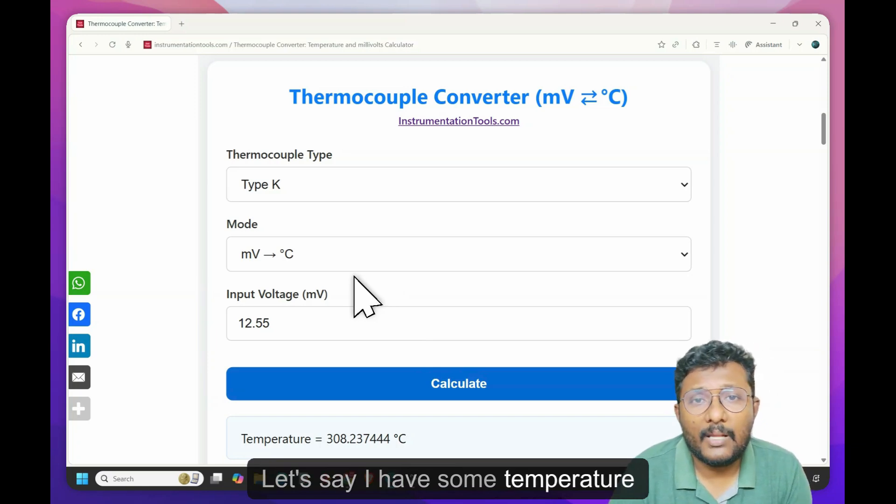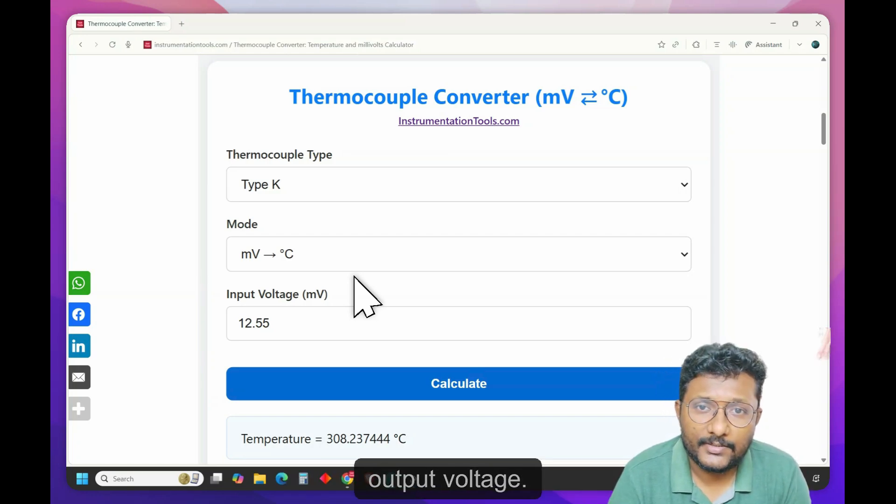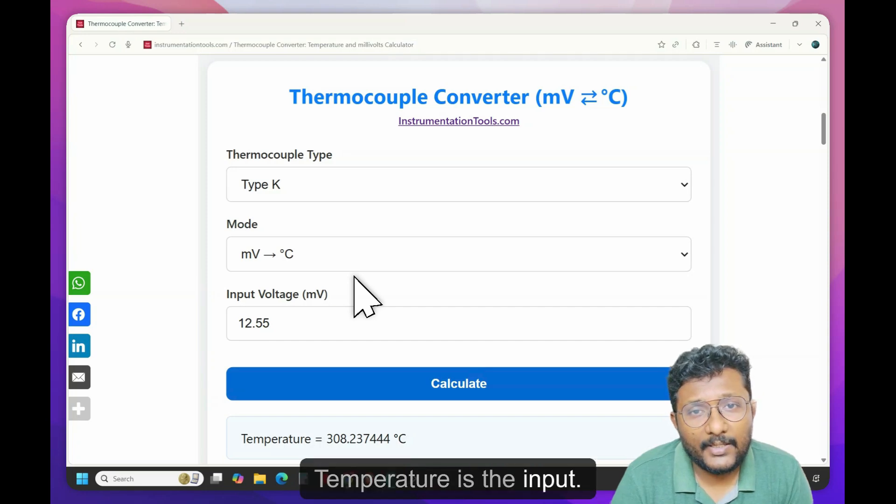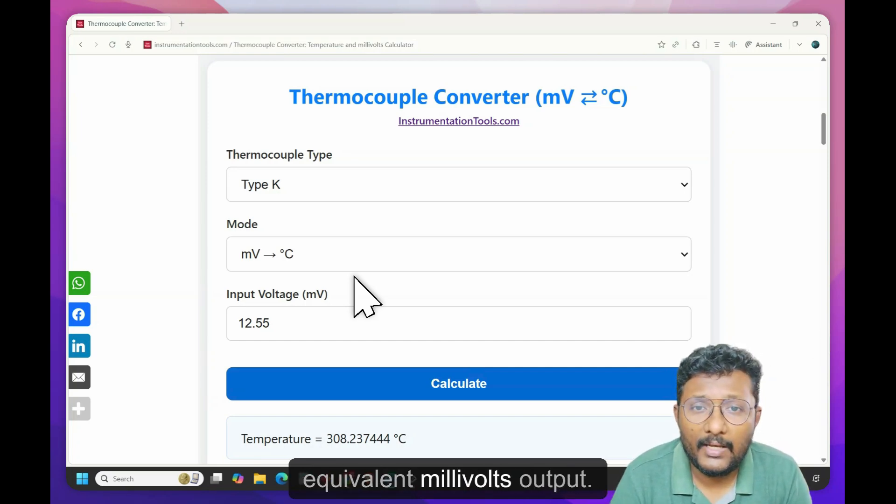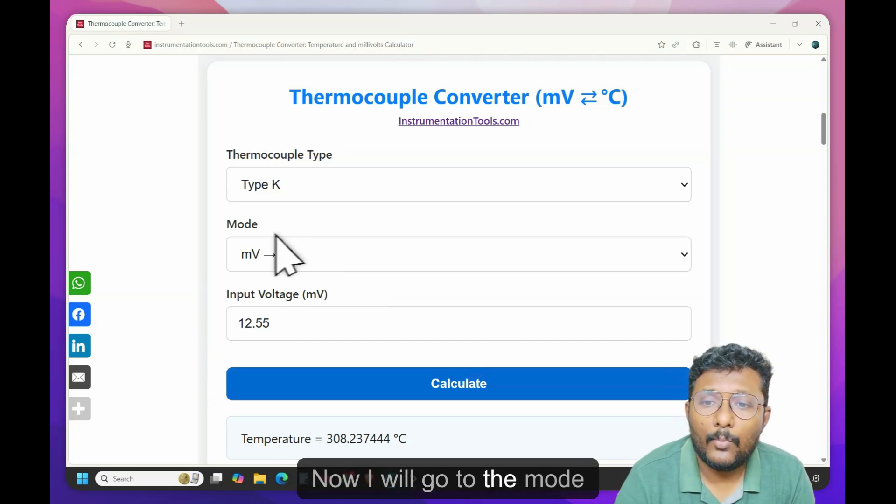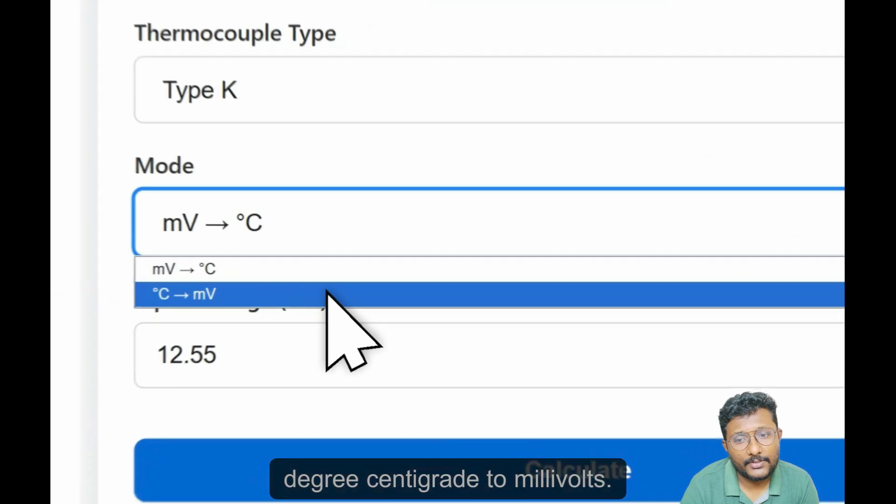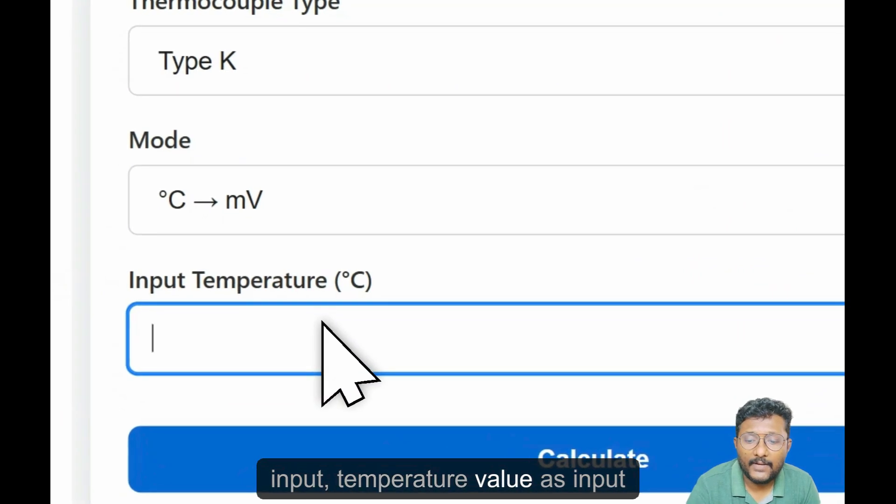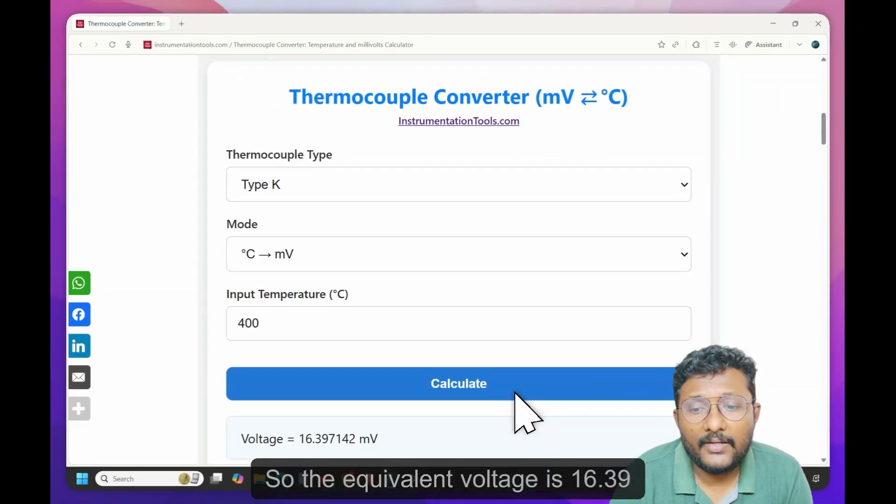Let's say I have some temperature value with me and I want to know the equivalent millivolts output voltage. So in this case, what is the input temperature is the input. Let's say the temperature is 400 degree centigrade. And now I want to know the equivalent millivolts output. Now I will go to the mode and I will select second one degree centigrade to millivolts. So here I am giving temperature input temperature value as input and then I will click on the calculate button. So the equivalent voltage is 16.39 millivolts.